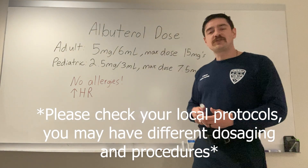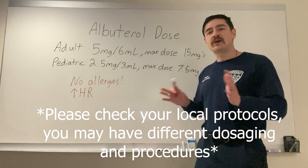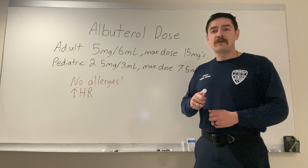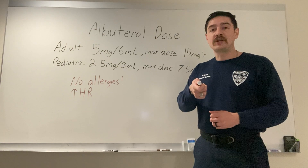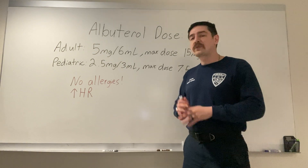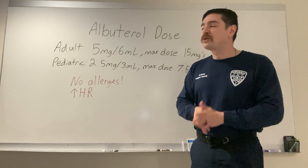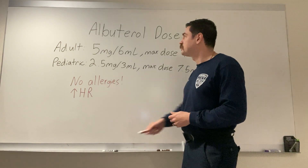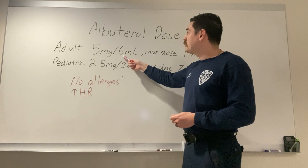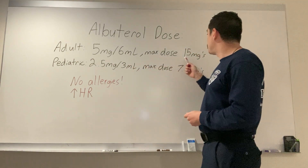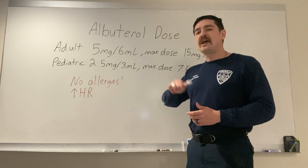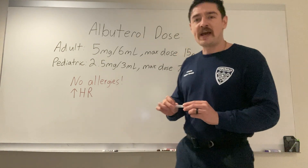Now let's talk about the actual medication. Just note, these are the protocols for Annaville Fire Department — this may not be the protocols you work under, so please check your local protocols and follow what your medical director says. For albuterol, the adult dose for Annaville is 5 milligrams per 6 ml, with a max dose of 15 milligrams. This can be confusing because there are both milligrams and milliliters — that's because albuterol comes as a liquid solution.